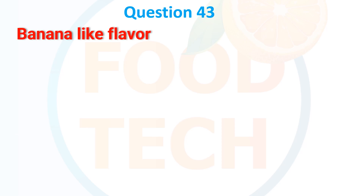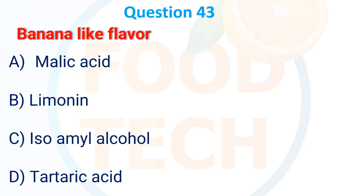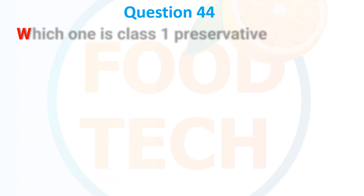Question 43. Banana-like flavor is associated with: A. Malic acid. B. Limonin. C. Isoamyl alcohol. D. Tartaric acid. The correct answer is C: isoamyl alcohol.